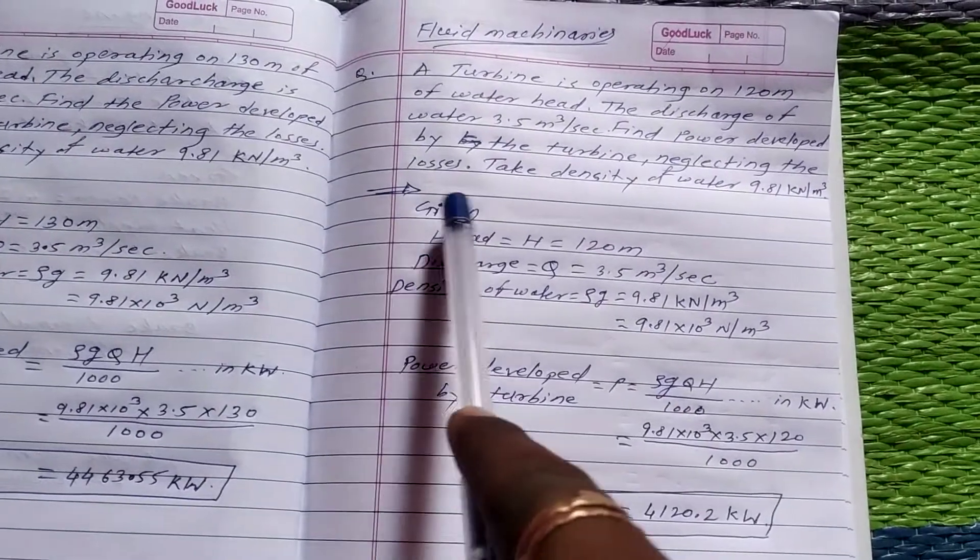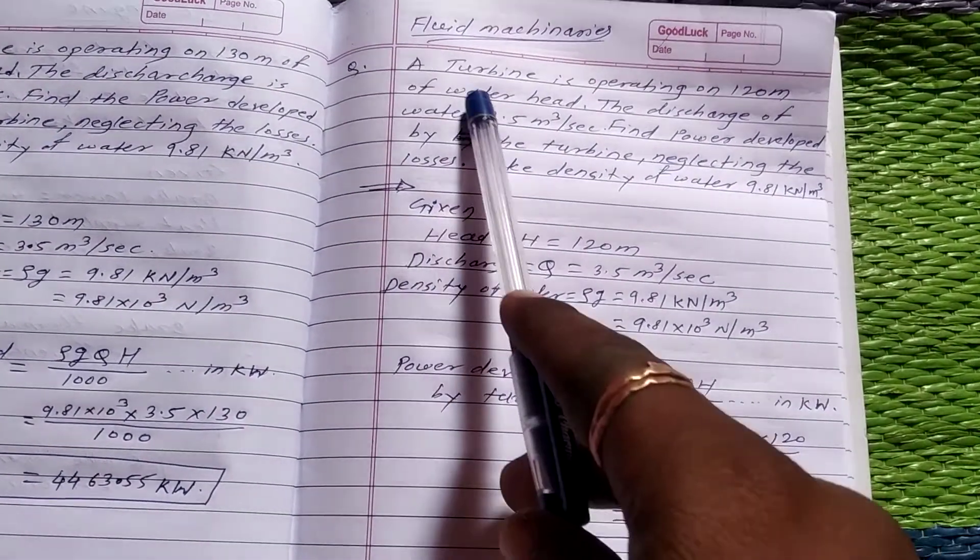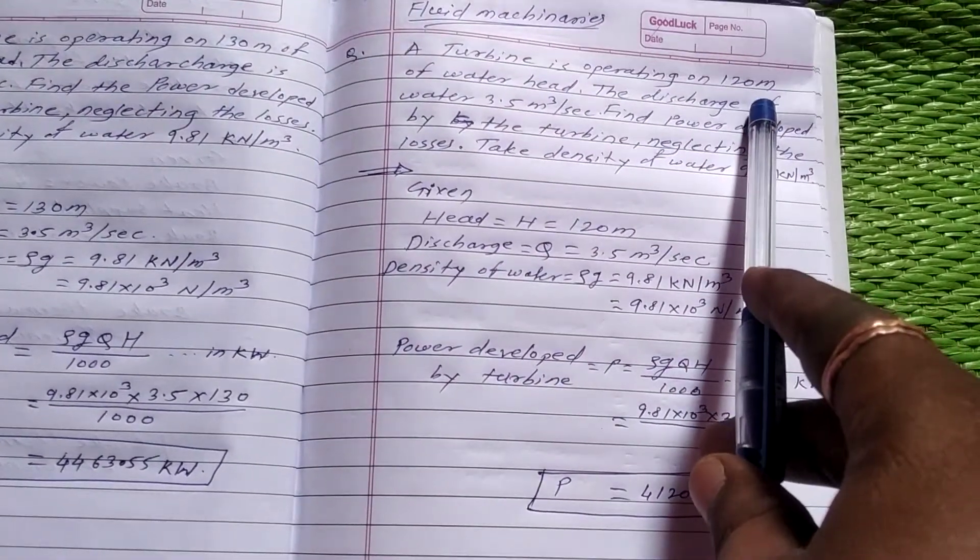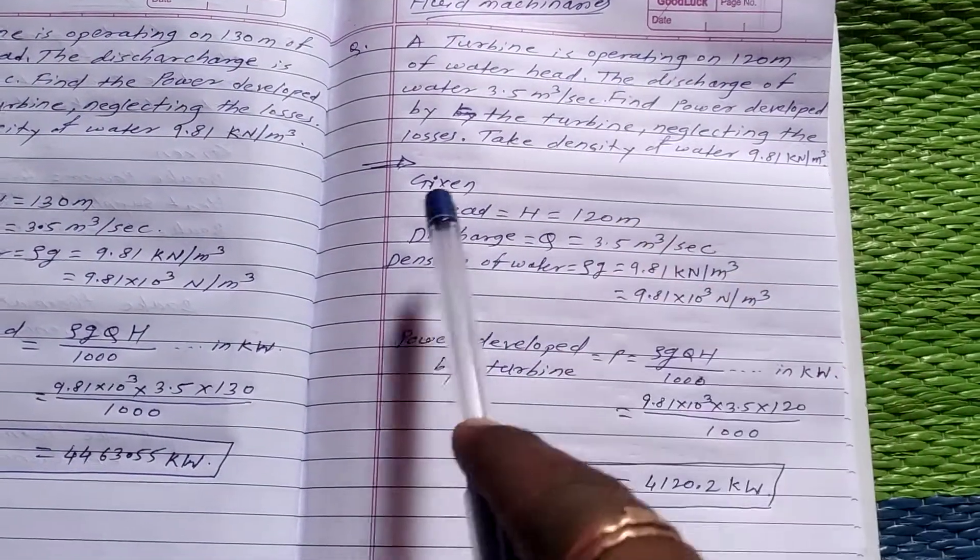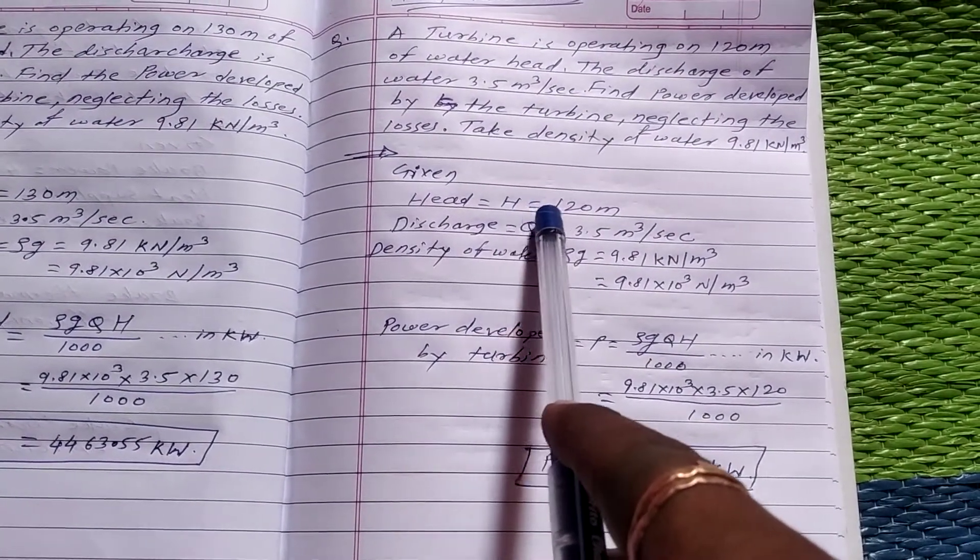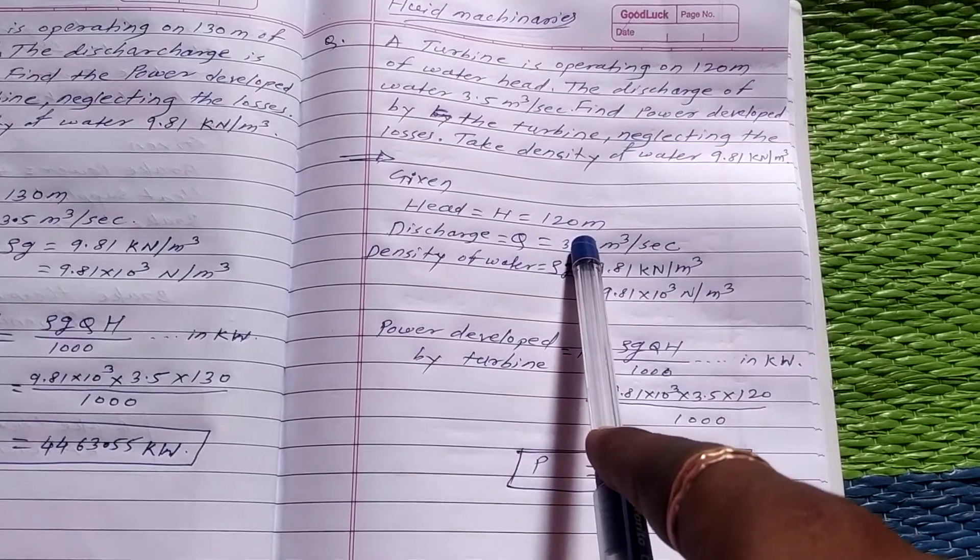First of all, write the given. In this problem, a turbine is operating on 120 meter of water head. The head is given, write h = 120 meter.